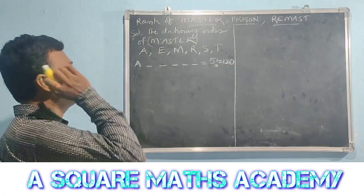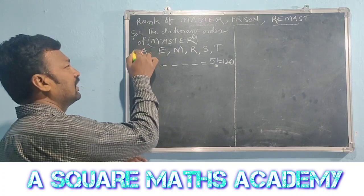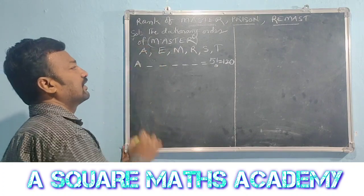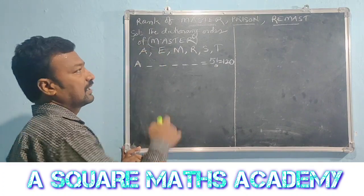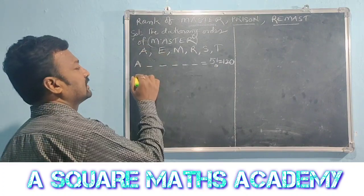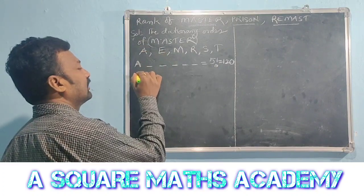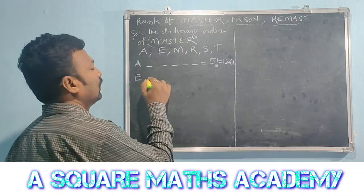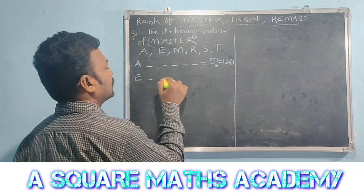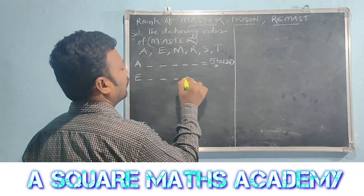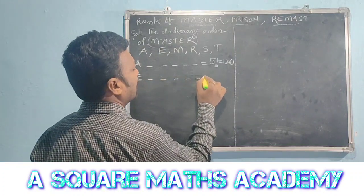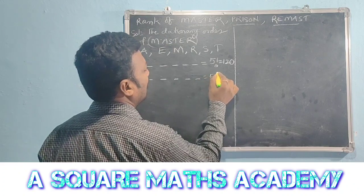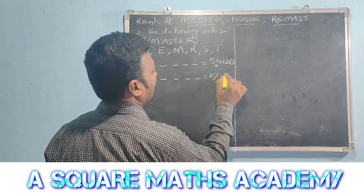Next, words starting with letter E. Fix E in the first place, then arrange the remaining 5 letters in 5 places. 5 factorial equals 120.